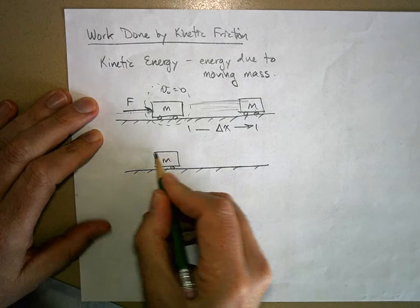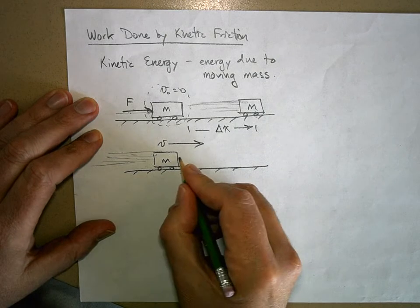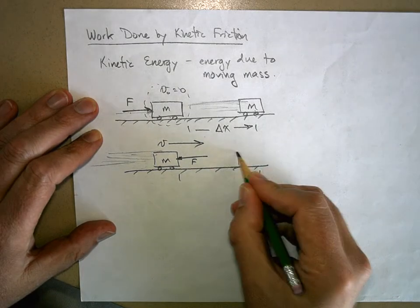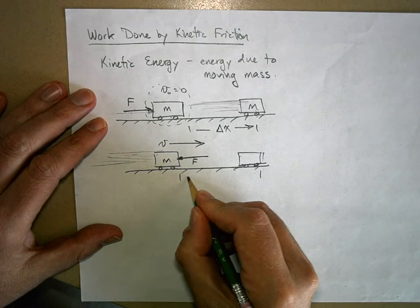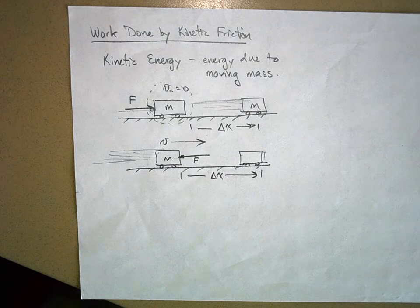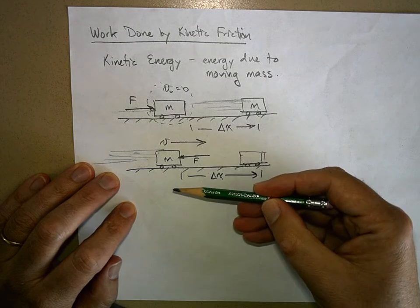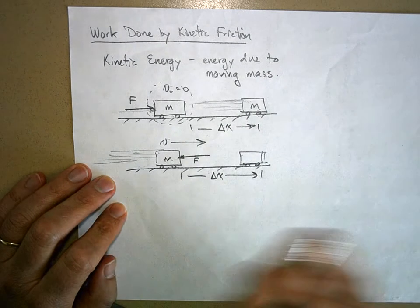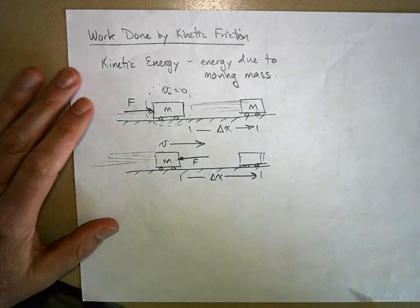Now here's a similar situation: my crate on wheels moving really fast. Somebody applies a force to it to make it stop, and it takes this far to stop. The object had kinetic energy, but somebody did negative work on it — they applied a force in the opposite direction of displacement and slowed it down, taking its energy away.